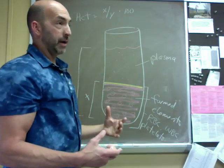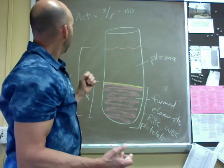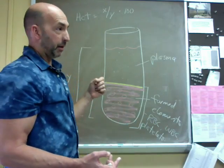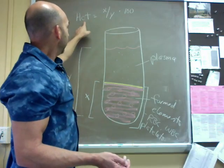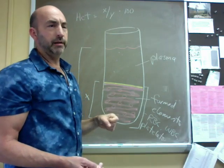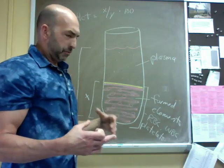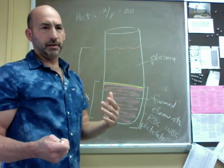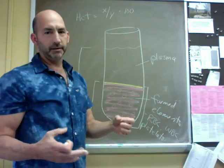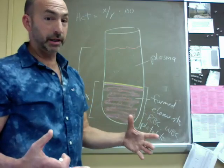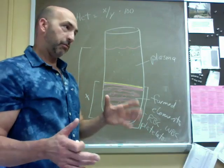Secondarily, hematocrit is the primary determinant of blood viscosity—viscosity meaning how thick the blood is, which is a factor that plays into the resistance to moving it through the blood vessels. Thick blood, think of like molasses or honey, would be very bad. That would be far too viscous to move rapidly through the vessels, so we want to minimize our viscosity by keeping hematocrit below 50% generally.